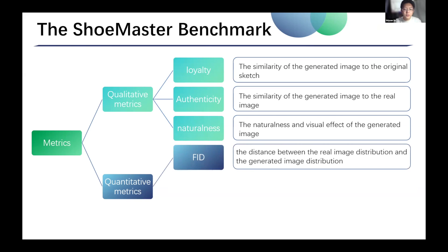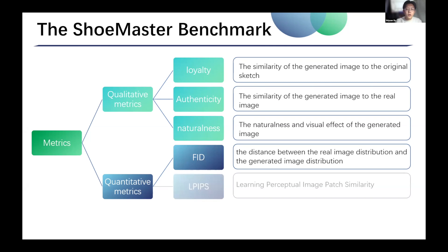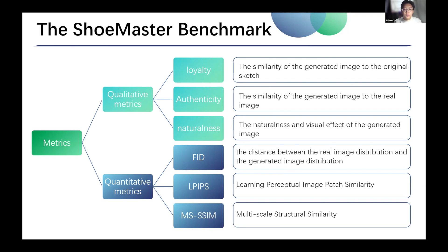In terms of quantitative metrics, the first is FID. The FID score measures the distance between the real image distribution and the generated image distribution based on features extracted by a pre-trained network. The smaller the distance, the closer the generated distribution is to the real distribution, so the smaller the FID the better. The second is LPIPS, which computes the similarity between the activations of two image patches for a predefined network; lower values indicate greater similarity. The third is MS-SSIM, an SSIM index based on multiscale analysis, which is more flexible than single-scale methods in considering changes in viewing conditions.